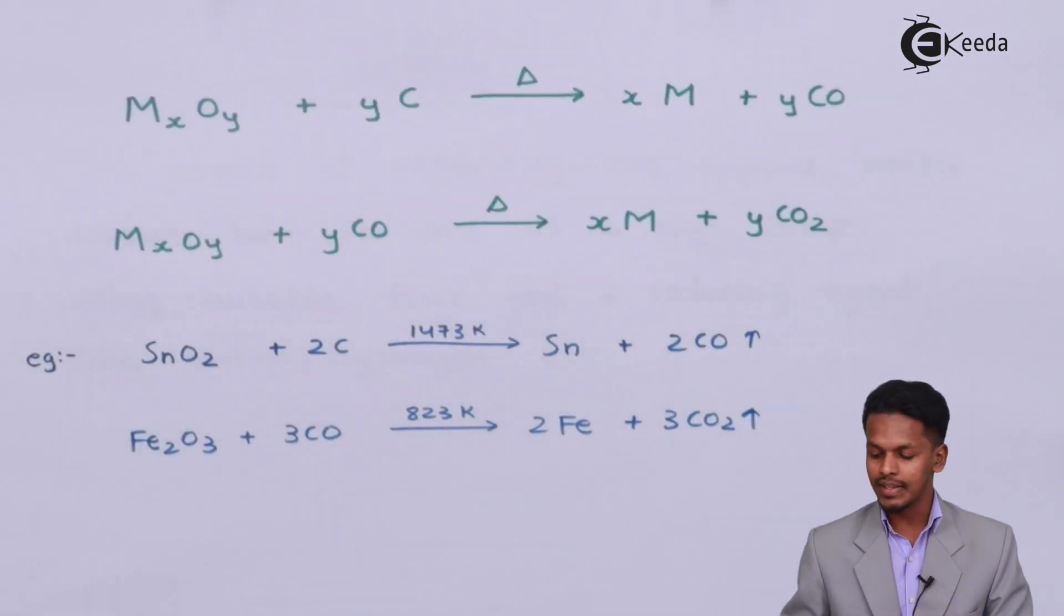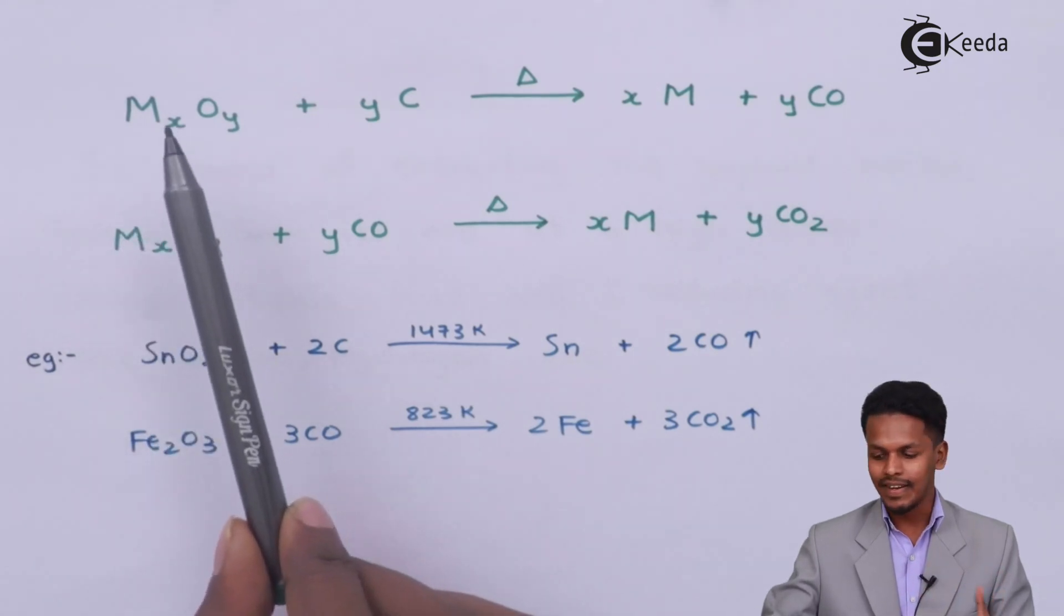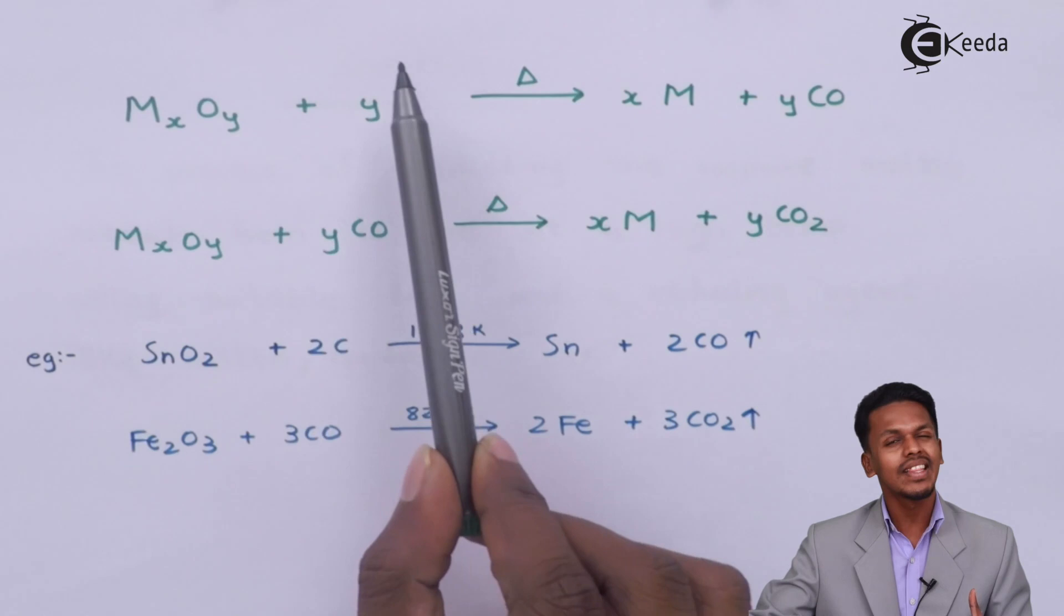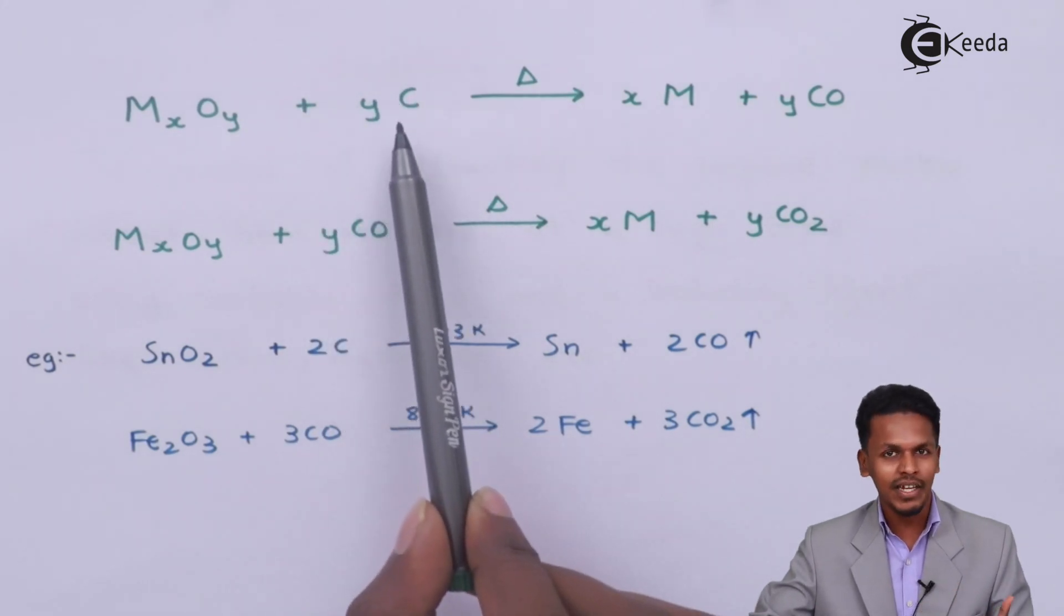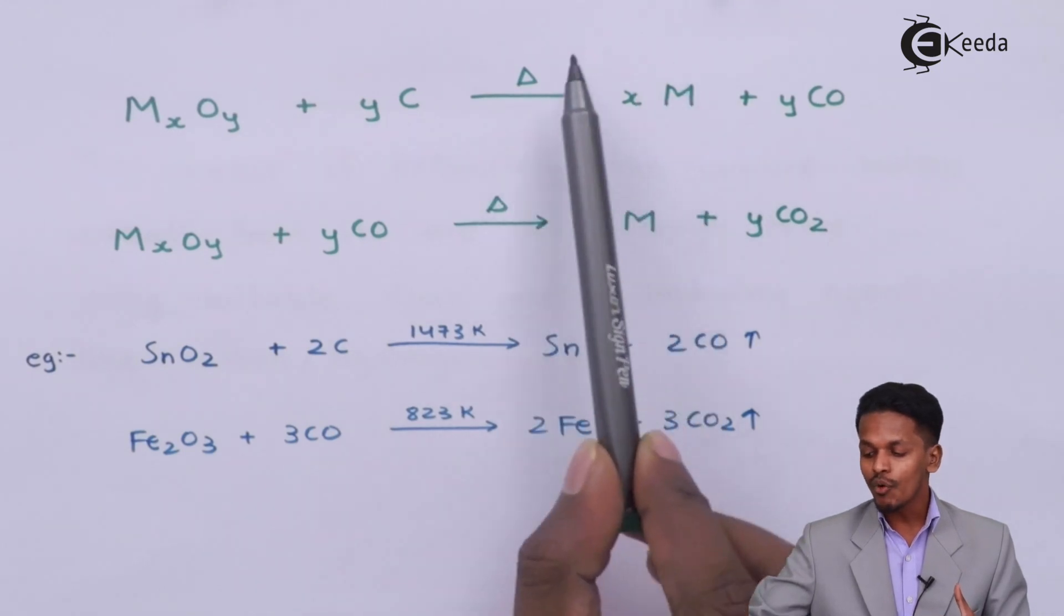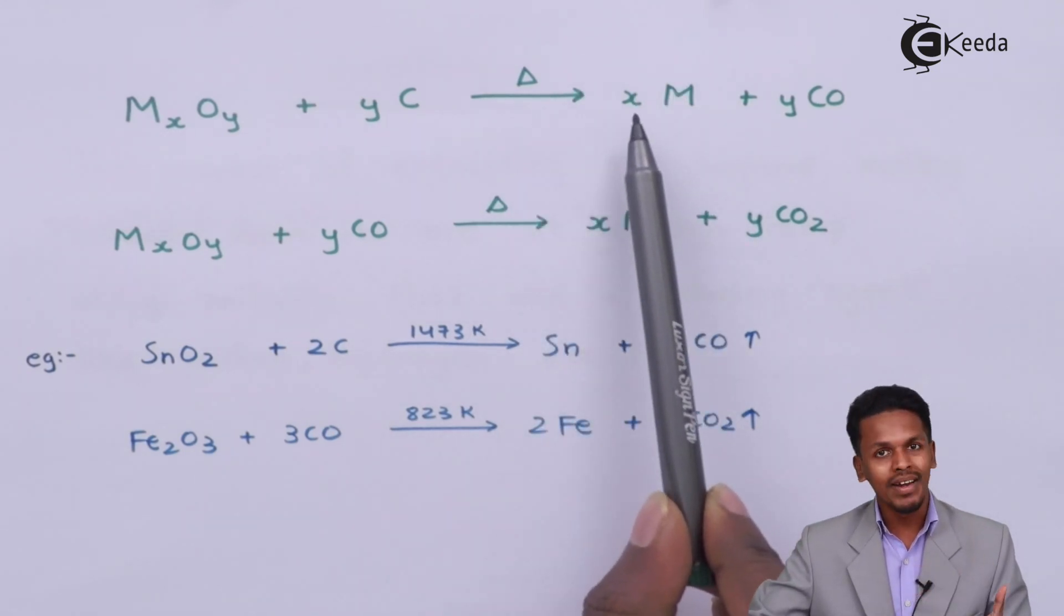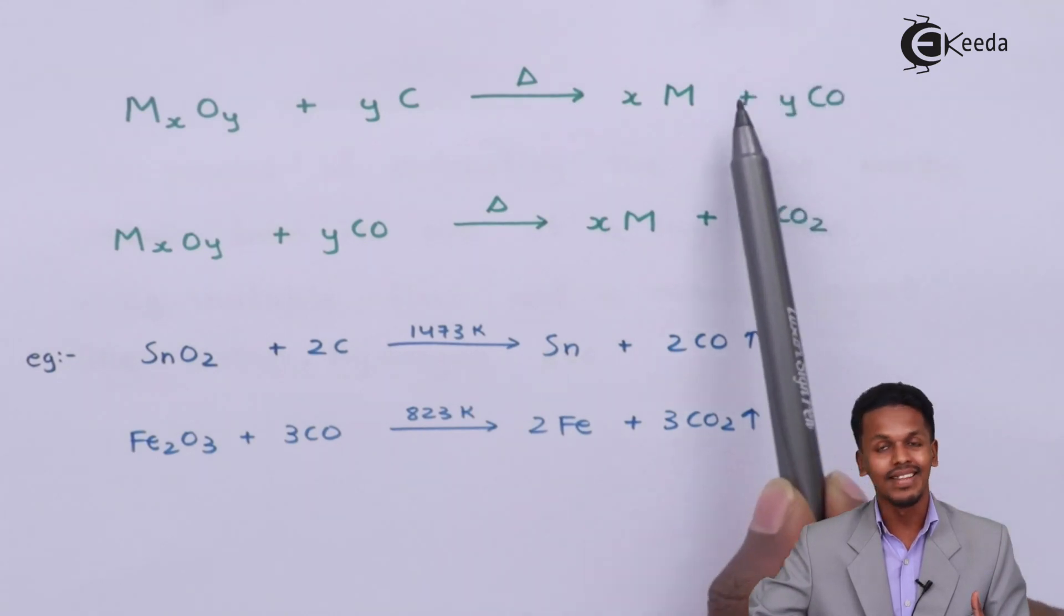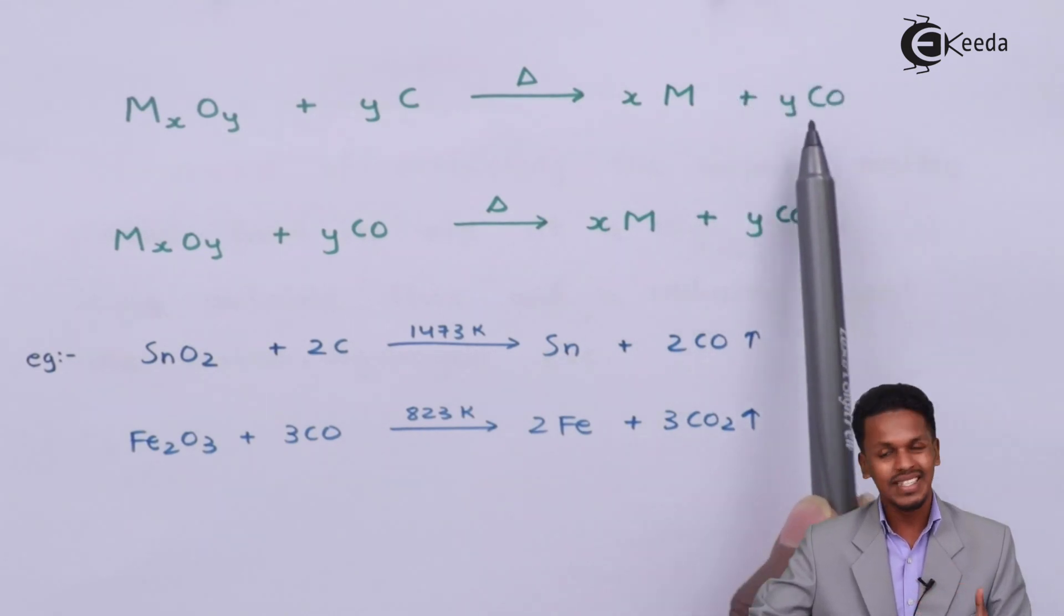Here we have a general reaction. Suppose if we have a metal oxide MxOy, and we are treating it with a reducing agent - in this case, y moles of carbon. While heating, the product we obtain is crude metal xM along with y moles of CO, which is the impurity that will be removed because it is a gaseous molecule.